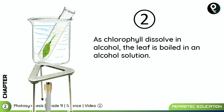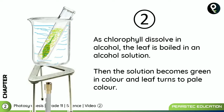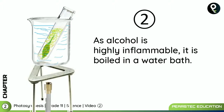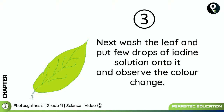As chlorophyll dissolves in alcohol, the leaf is boiled in an alcohol solution. The solution becomes green in color and the leaf turns pale. Because alcohol is highly inflammable, it is boiled in a water bath, not directly on the Bunsen burner. Step three: wash the leaf and put a few drops of iodine solution onto it and observe the color change.